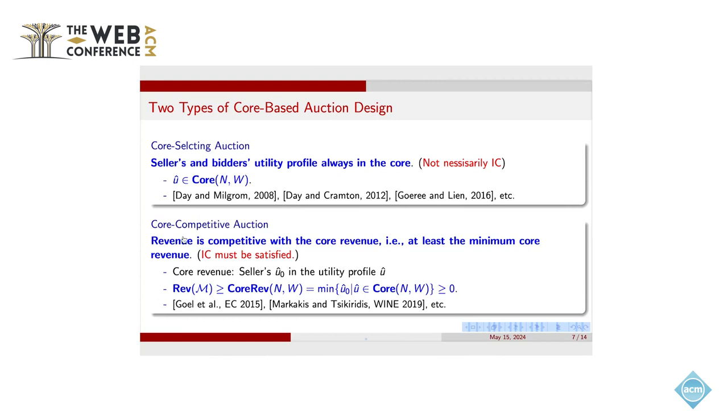This line focuses on the revenue, which is competitive with the core revenue. That means the auction revenue should at least be larger than the minimum core revenue. We want to note that in this line, we must satisfy the IC property. So core revenue here is just the baseline for the auction design regarding the seller's revenue. It is described as the minimum possible revenue given to the seller.